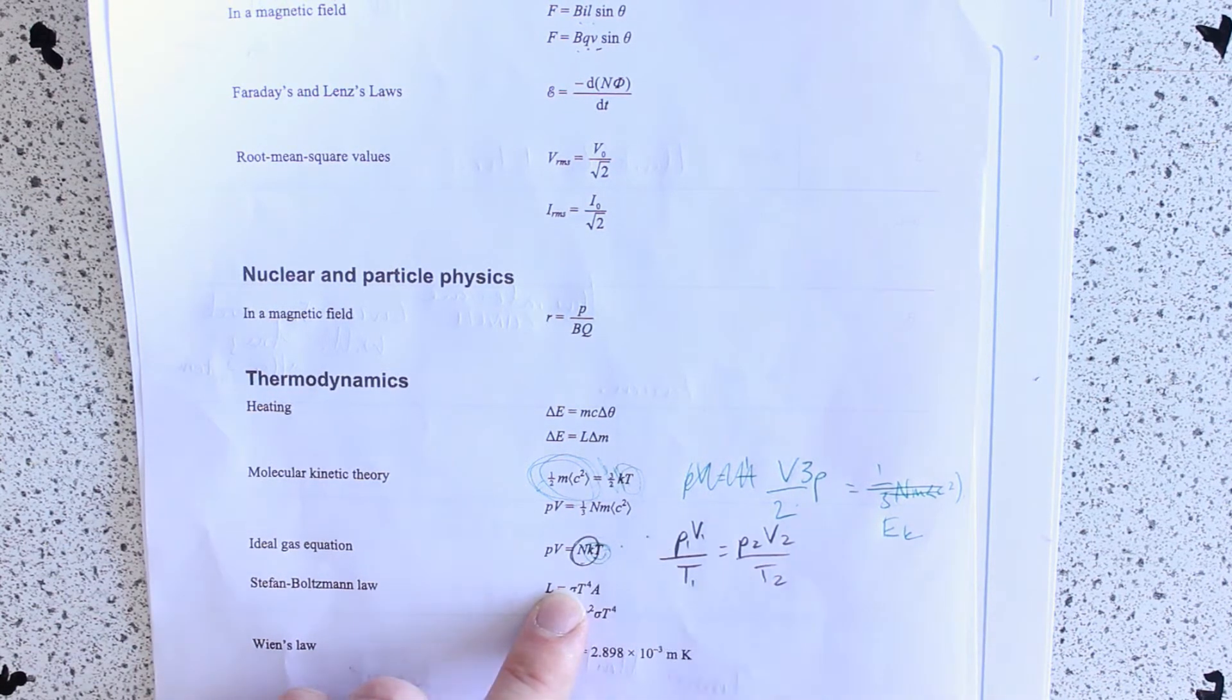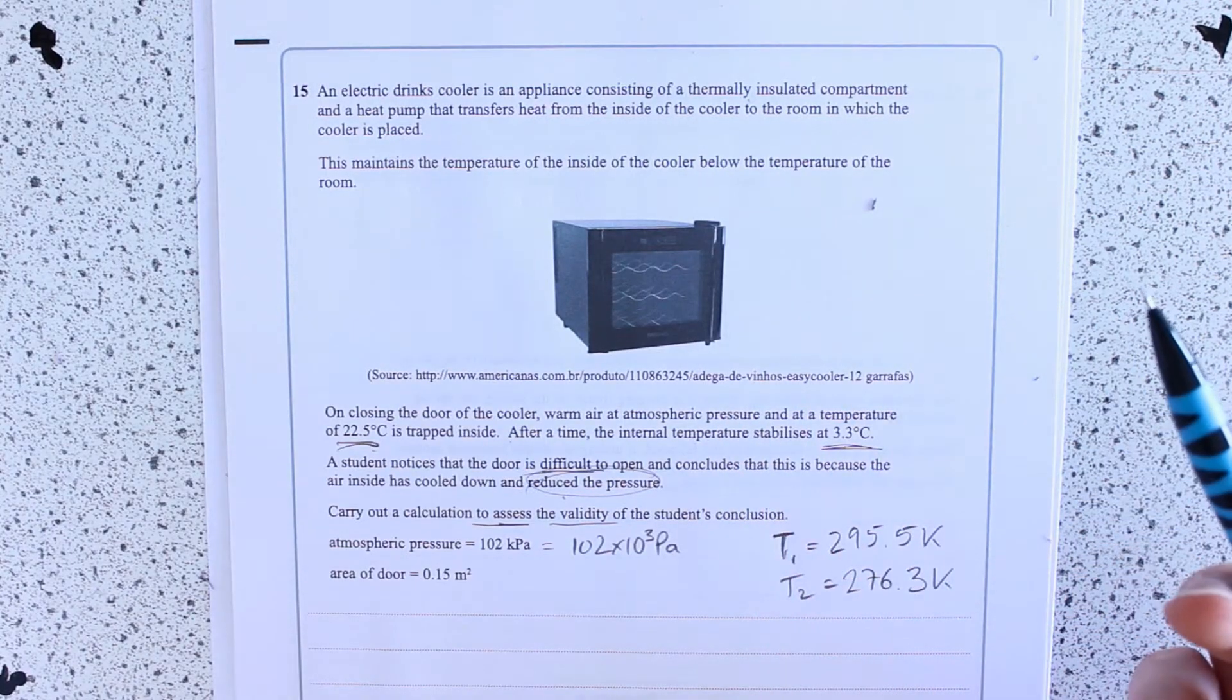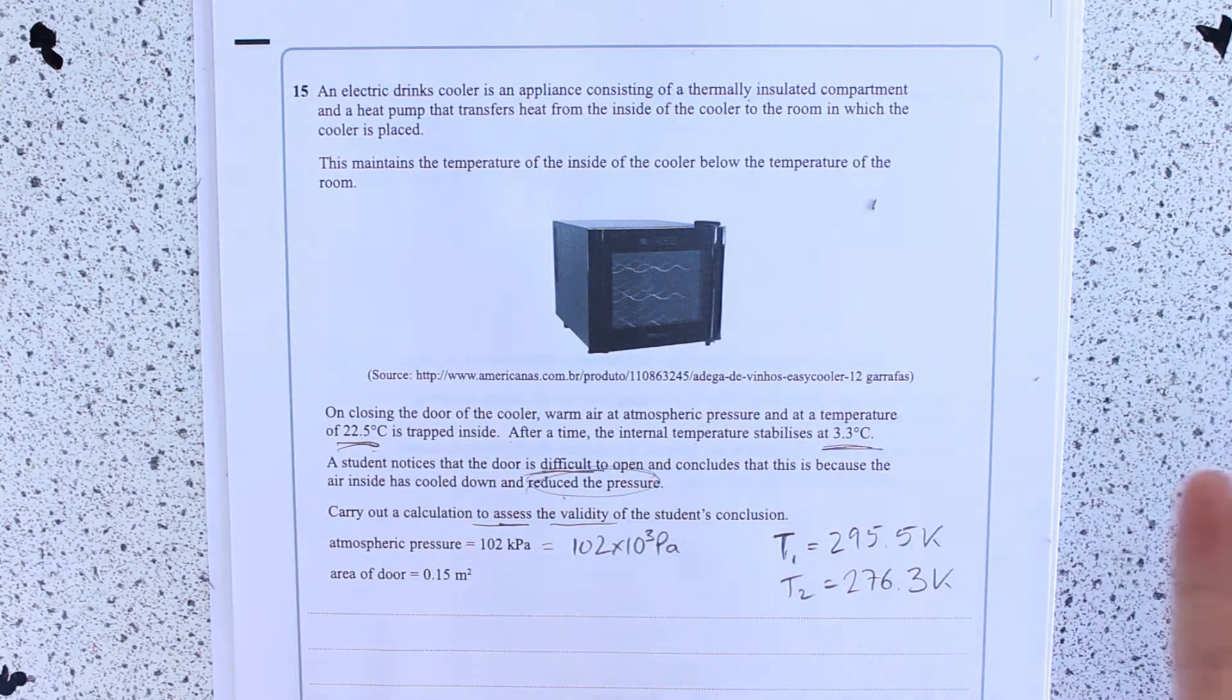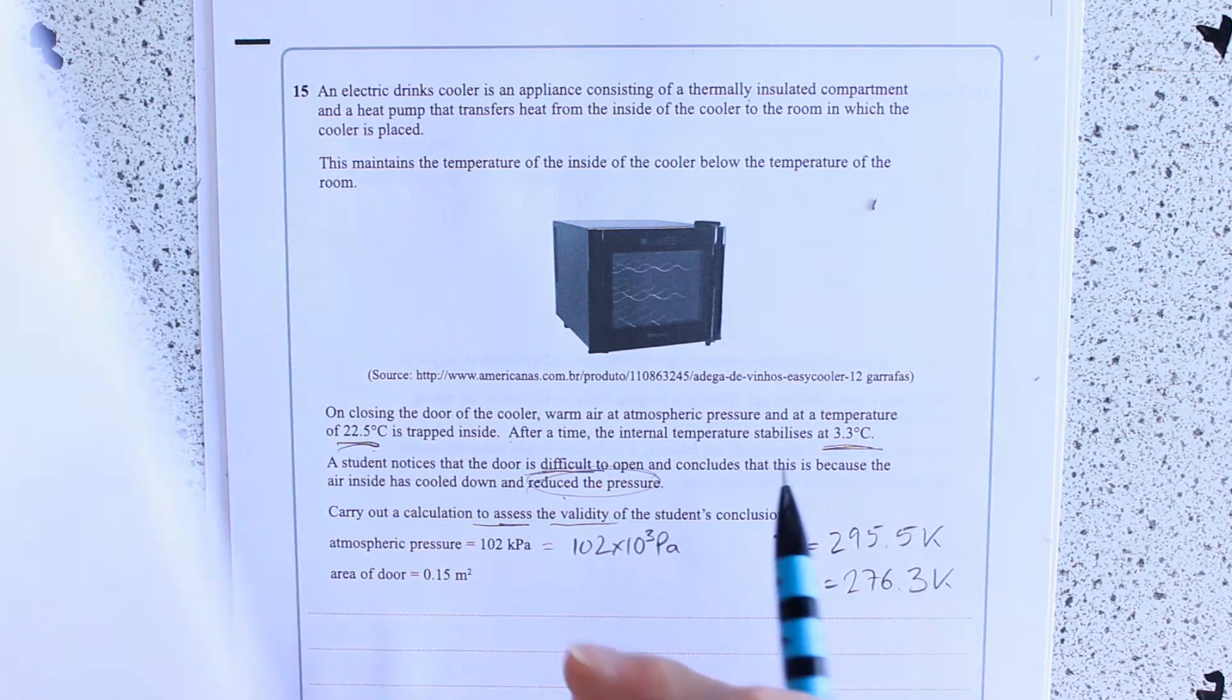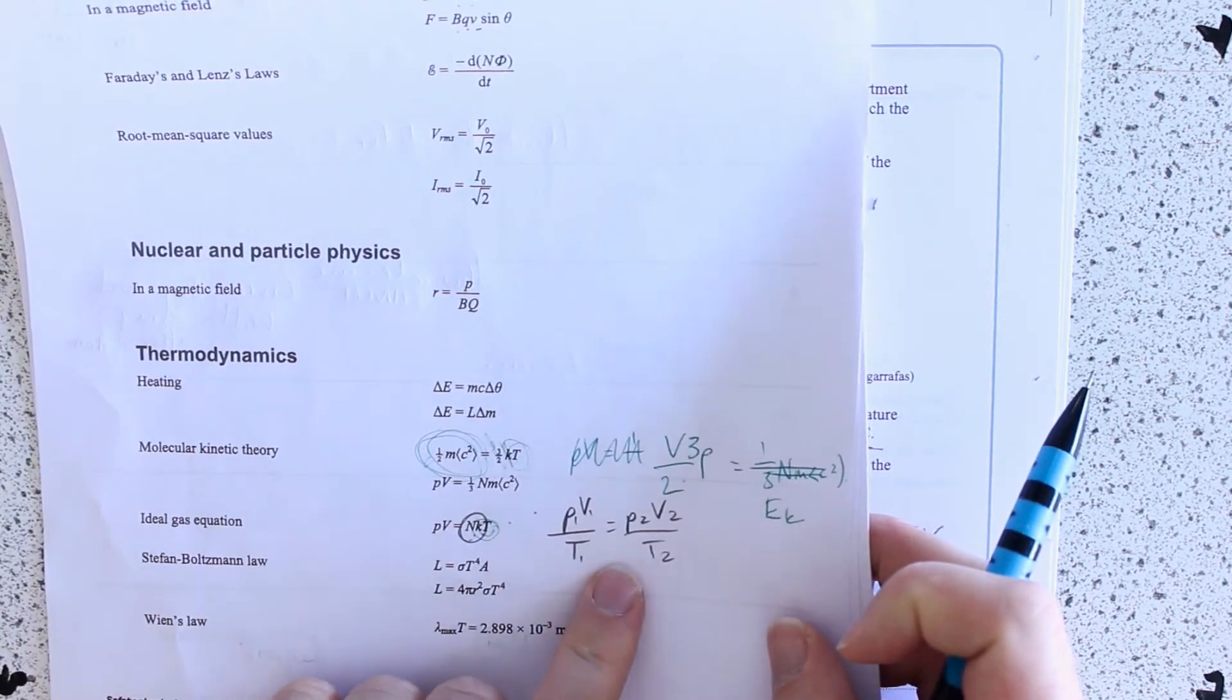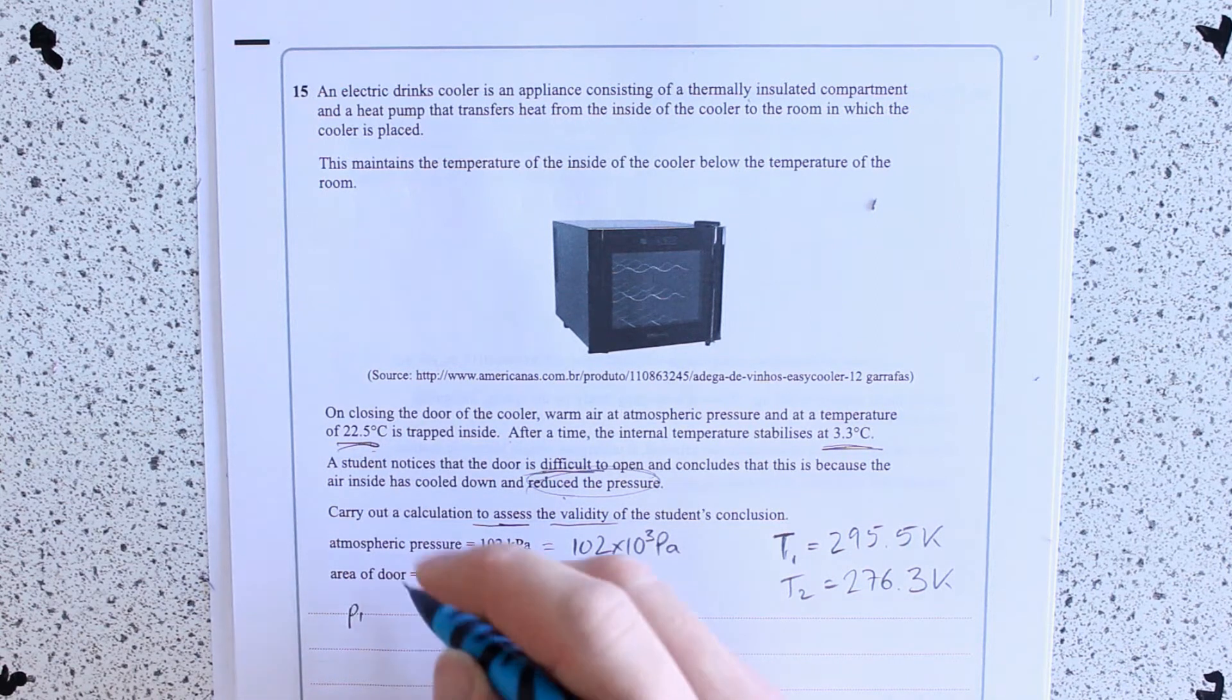So, N and K are usually going to be a constant. You're only going to need them if you're asked to work out the number of particles, and you're not. There's nothing in there so far that's going to say that. So, I'm going to copy it down in this form, because this is more useful for answering this kind of ratio change.